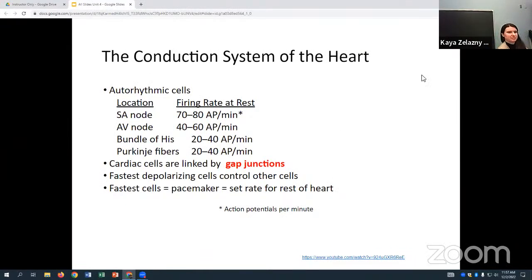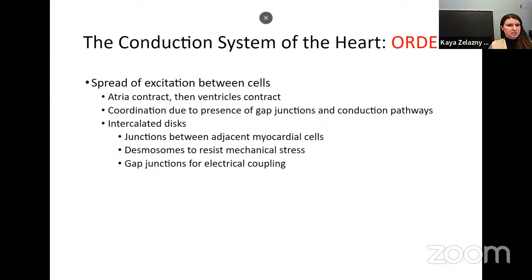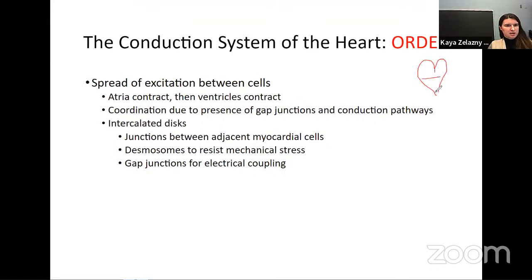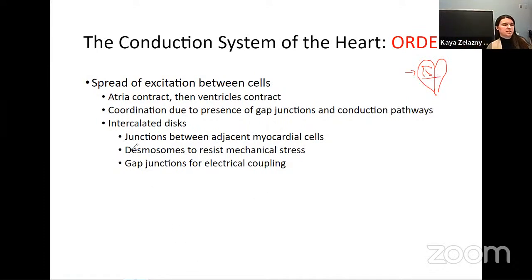Back to our slides. The order of contraction we saw: both the right and left atria at the top of the heart contract first. They're coordinated — they contract at the same time because the muscle cells have gap junctions between them, so they all get the same signal. The conduction fibers spread out from the SA node to the AV node. The cardiac cells are also able to resist the pressure of blood as we're squeezing because they have another type of connection between them called a desmosome.